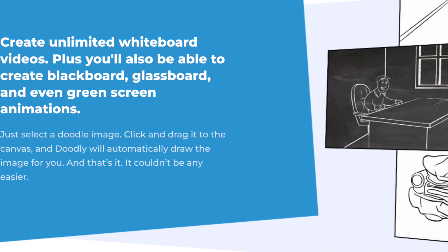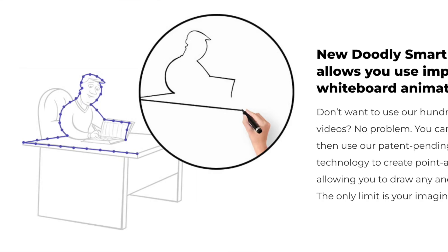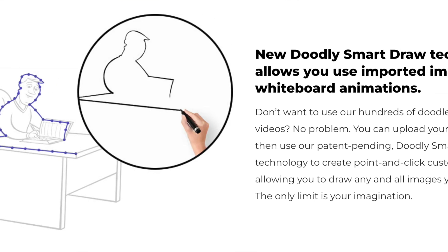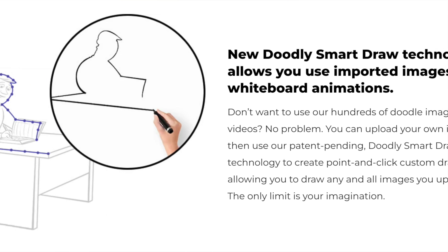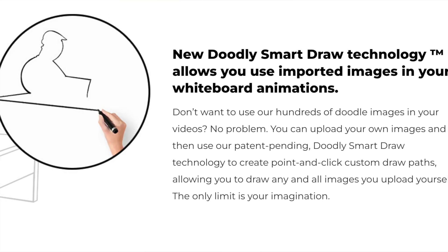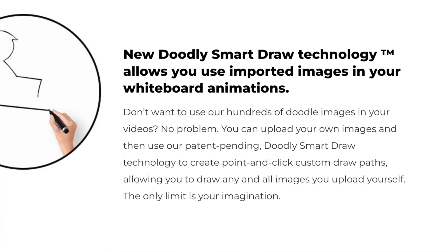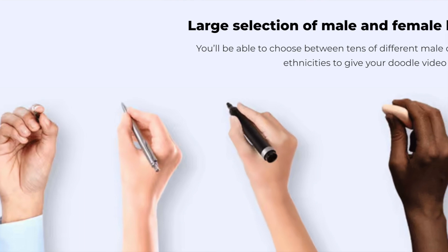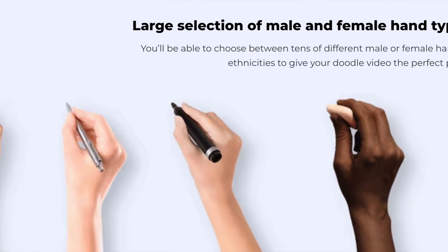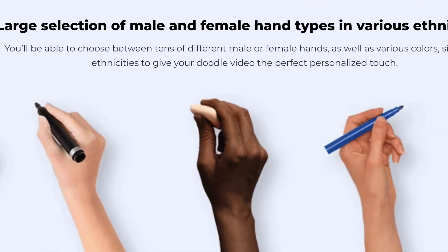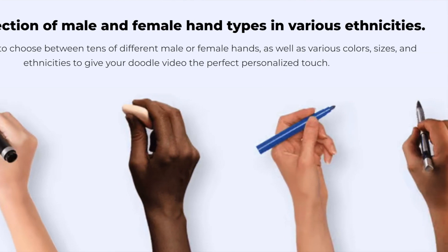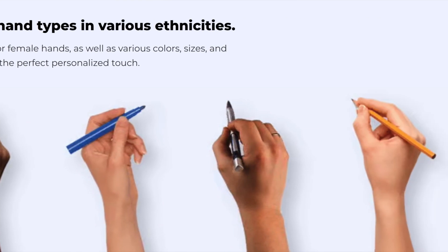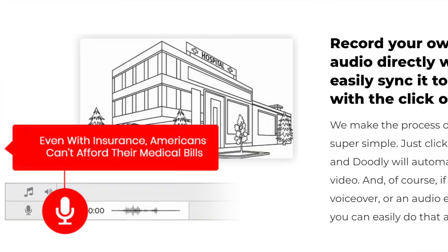Some of the key features are: a drag and drop builder to simplify everything for you, custom draw paths to define the sequence and manner in which elements are drawn, an extensive asset library with a rich collection of characters, props and backgrounds, voiceover integration, and multiple board styles — you can choose from whiteboard, blackboard, green board and even a glass board.